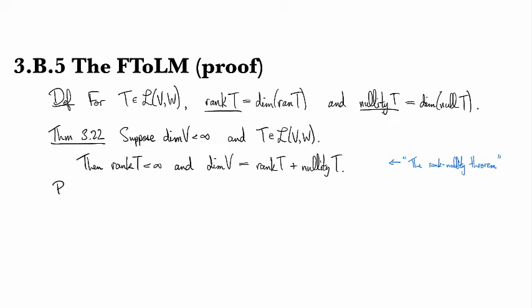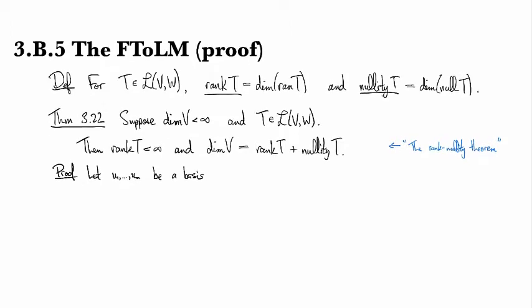As promised, time to dive into the proof of the fundamental theorem of linear maps. So let's start off with taking a basis for the null space. So I'm taking u1 through um to be my basis. So the nullity of T is going to be m, that's the highest subscript on the u's there.